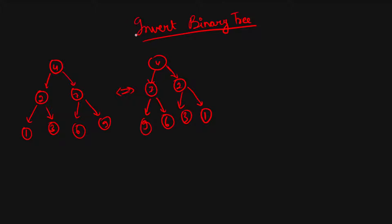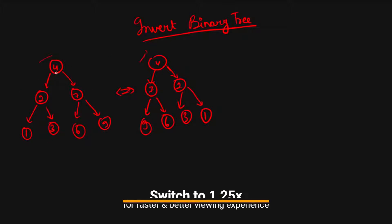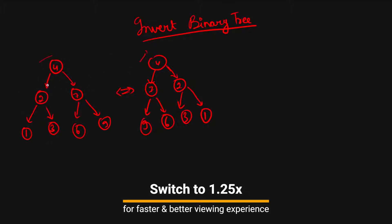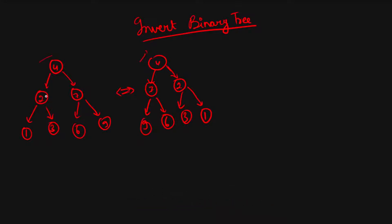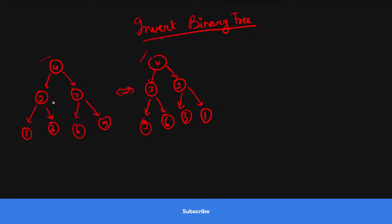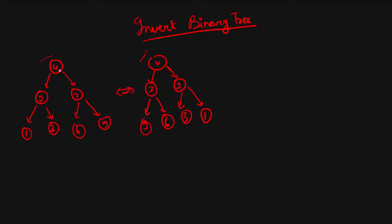Hello everyone, today we are going to solve the invert binary tree problem. We are given the root of a binary tree and we have to invert it and return the root. What invert means: the root stays the same, but the root's left child becomes the root's right child and vice versa. This happens for every node — its left child becomes its right child.